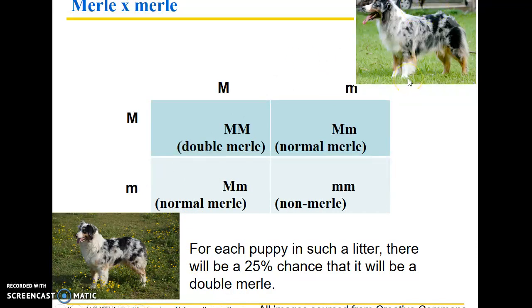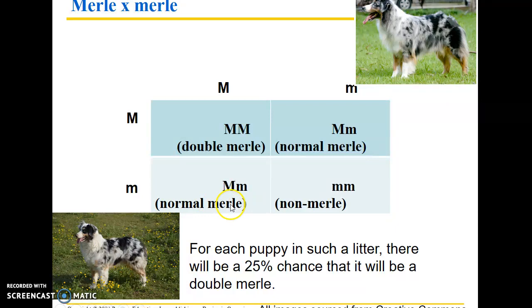If you breed two merle dogs together, for each puppy there's a 25% chance of being a 'double merle.' A normal merle dog is always heterozygous. Breeding a merle Australian Shepherd with another merle Australian Shepherd produces 50% normal merle pups, 25% non-merle, and 25% double merle. We'll pause here and pick up in the next and final segment.